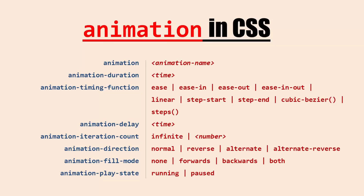Then we have animation direction — that is how we want the animation to work. If we want it to work in reverse order, we can specify reverse. Then we have alternate, which means once the animation runs in the normal direction, the next time it runs in reverse. We also have alternate-reverse. The next option is animation fill mode — that is what should happen when the animation has stopped running. You can let it stay at the current state or revert to the original state. Finally, we have animation play state, which you can use with JavaScript to set the state to running or paused.